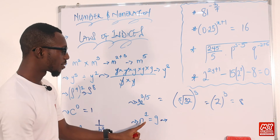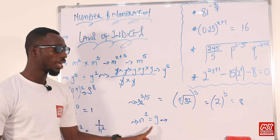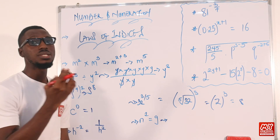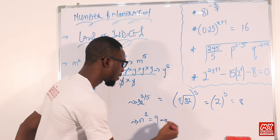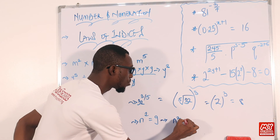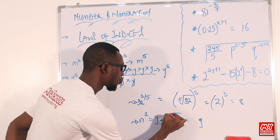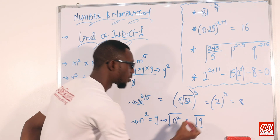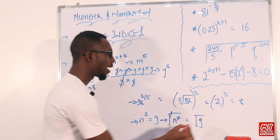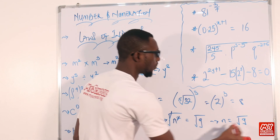So let's go to the last law reserved for this particular video segment. We have n raised to power 2 equals g. To eliminate this power, you square root both sides. So squaring both sides gives n raised to power 2 equals g under a square root. The square root cancels the square, so what I have left is n equals the square root of g.